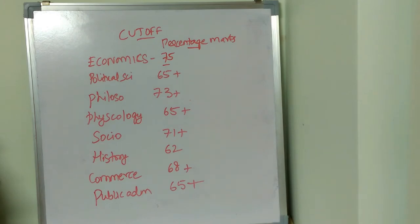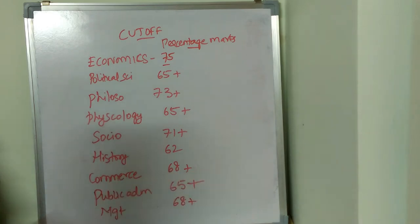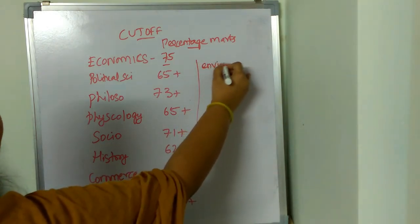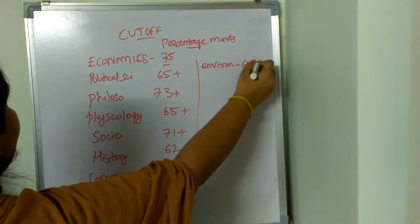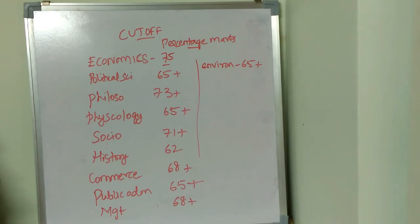Coming to management, the cutoff is going to be 68 plus. Coming to environmental sciences, the cutoff is going to be 65. These are the expected cutoffs; however, cutoffs will be different based on the difficulty level of the paper and performance of the students. If the paper difficulty is really high, the cutoff will come down; if the paper is very easy, the cutoff will increase.